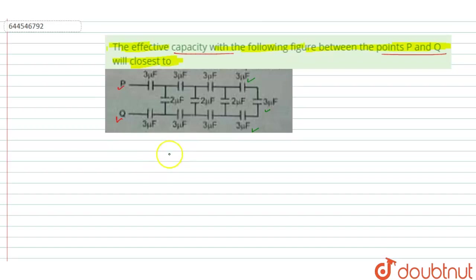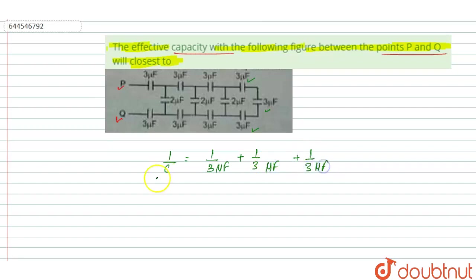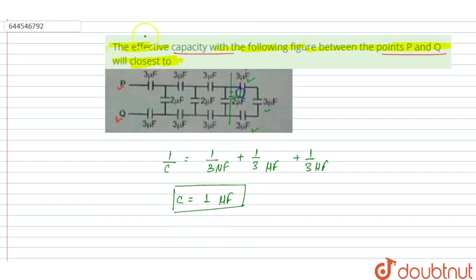For the series combination, 1/C equals 1/(3 μF) + 1/(3 μF) + 1/(3 μF). When we solve this, we get C equal to 1 micro farad. That means this series combination gives a value of 1 micro farad.